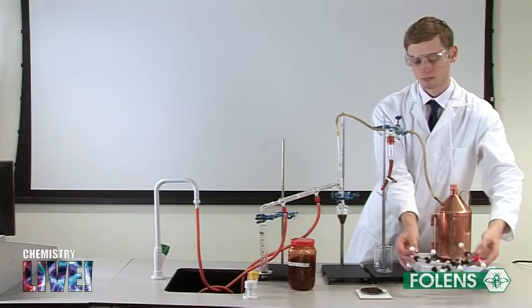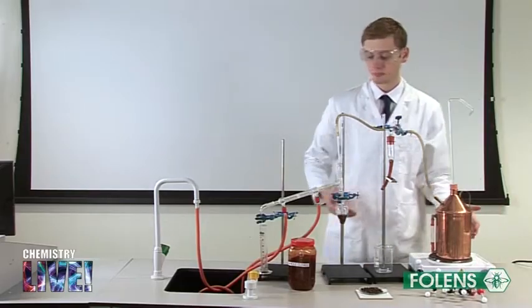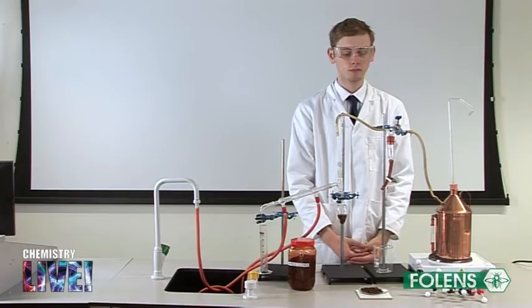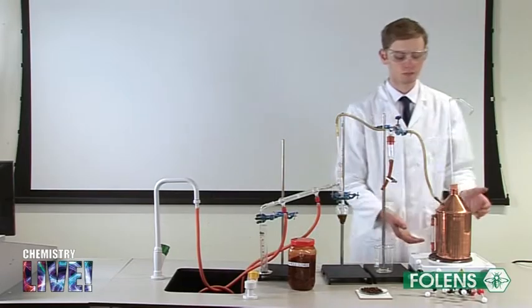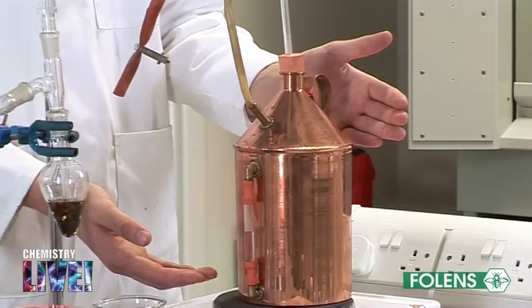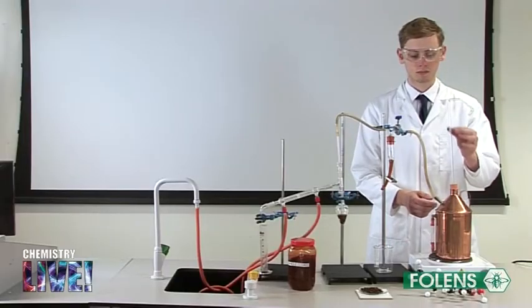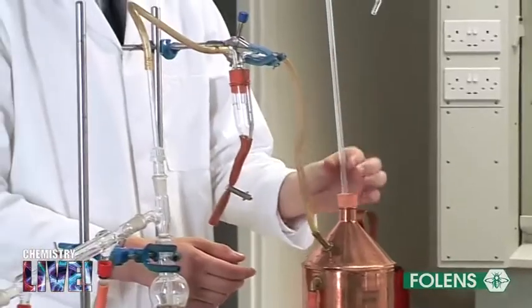Set up the apparatus for steam distillation as shown. Steam is produced in the steam generator. The steam generator is fitted with a safety tube to prevent build-up of pressure.